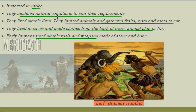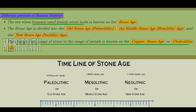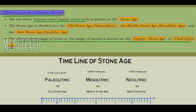Early humans modified their natural conditions to suit their requirements and lived a very simple life. They were nomads — they hunted animals and gathered fruits, nuts, and roots to eat. They lived in caves, and clothing was made from the bark of trees, animal skins, and animal furs. The weapons and tools they used were made of stones and bones, and this is how they hunted in the early age.